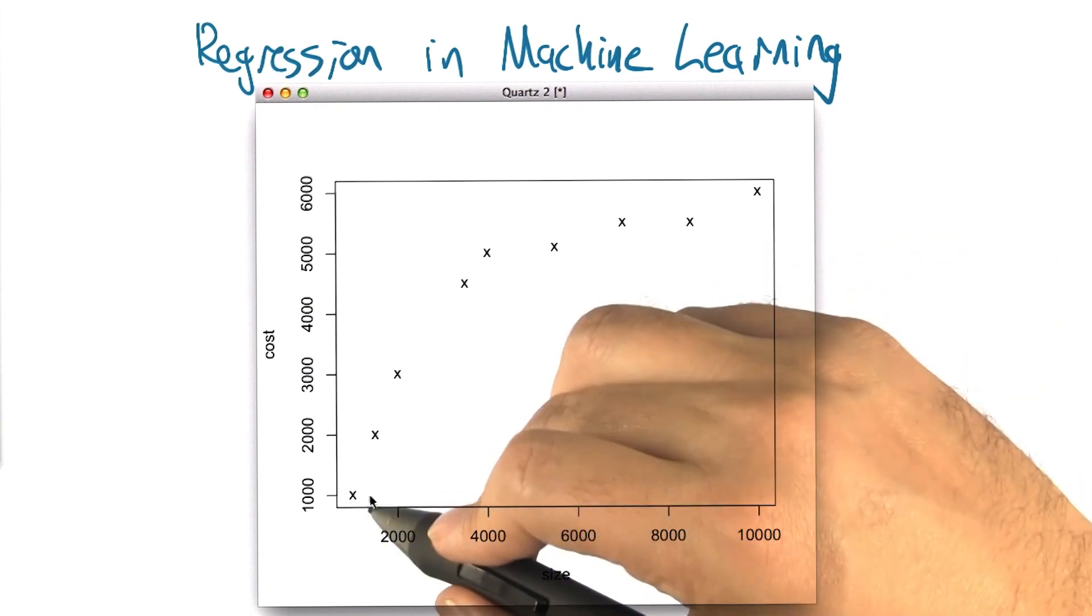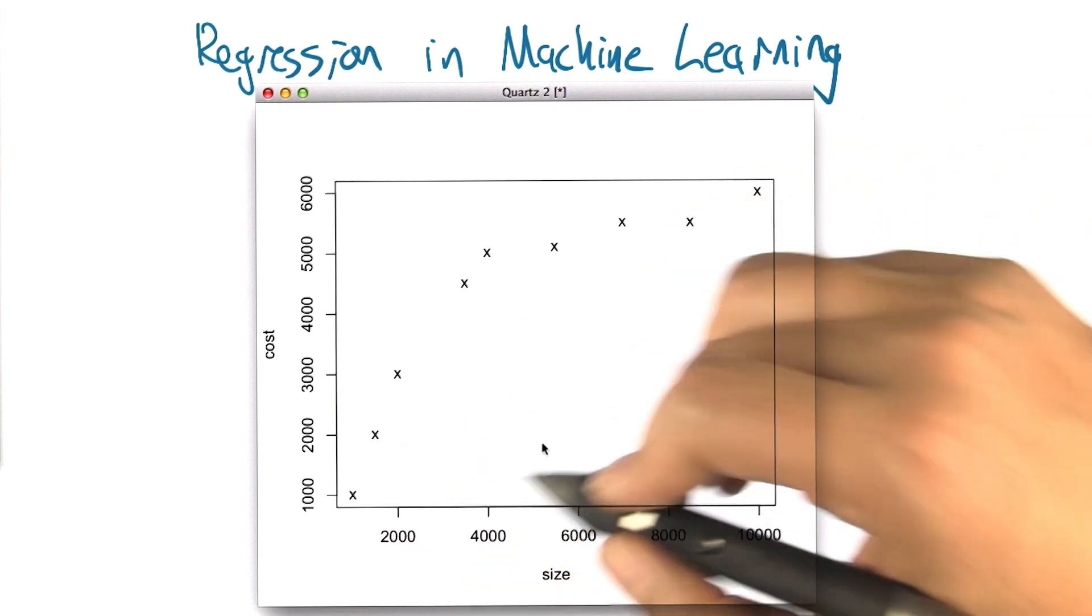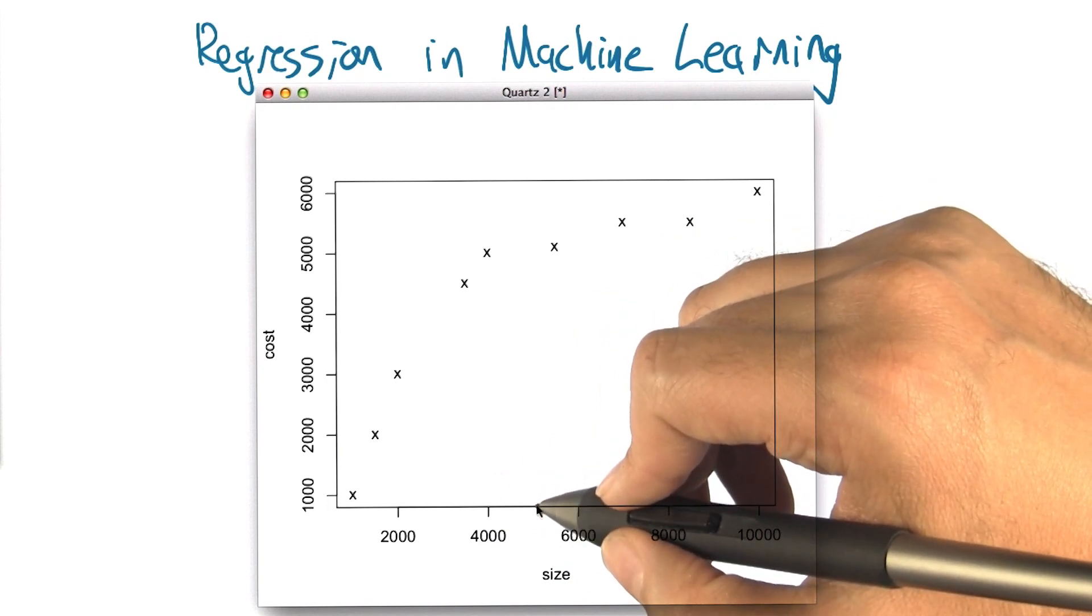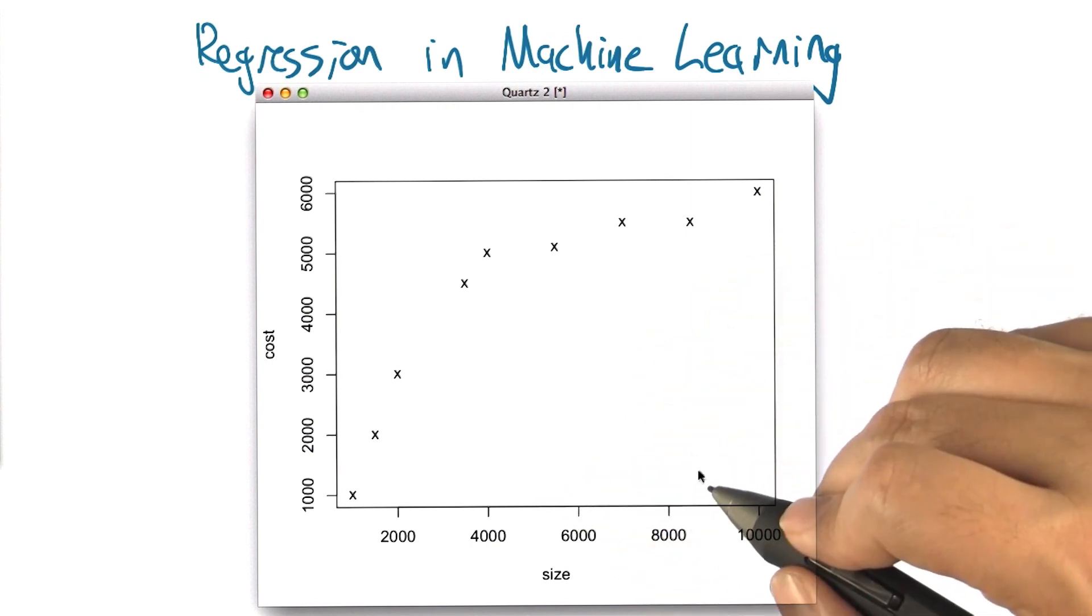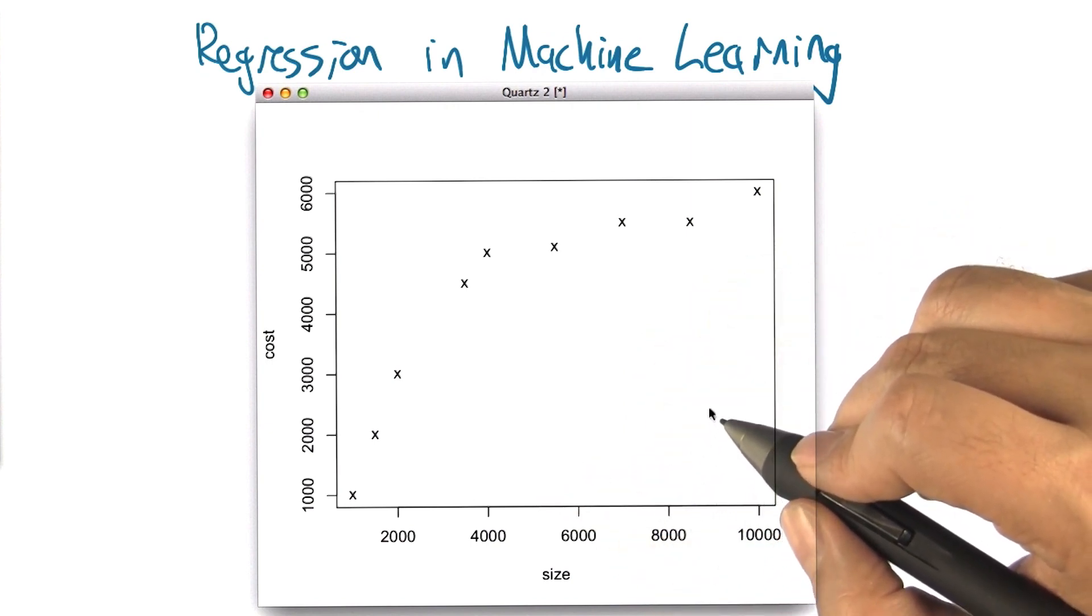So imagine that these are the relationship that we observe. And now we want to answer a question like, well what happens if we find a house on the market and it's about five thousand square feet, what do you think a fair price for that would be? So what do you think Charles, looking at this, what do you think a fair price for a five thousand square foot house would be?